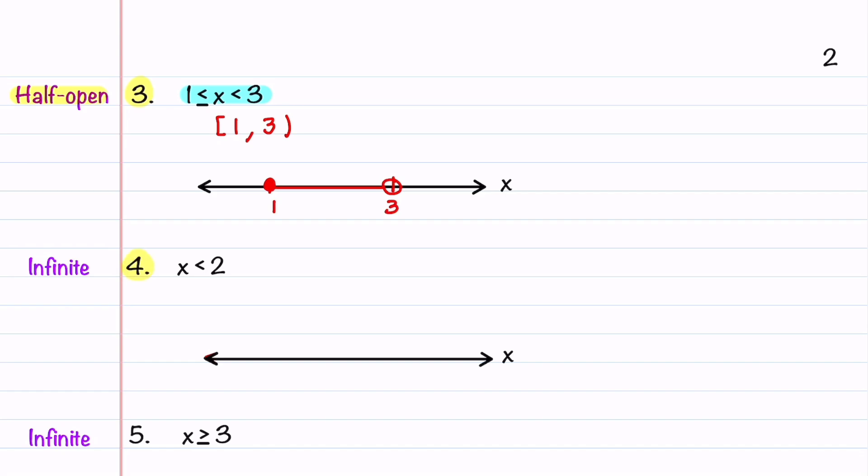Our fourth example is an infinite interval example. Our inequality indicates that x is all real numbers less than 2, extending infinitely to the left. To show that all real numbers less than 2 are included, we write our interval as minus infinity comma 2. We'll then put 2 on our number line, put an open circle at 2, and then draw our line to the left to indicate that all numbers to the left are included.